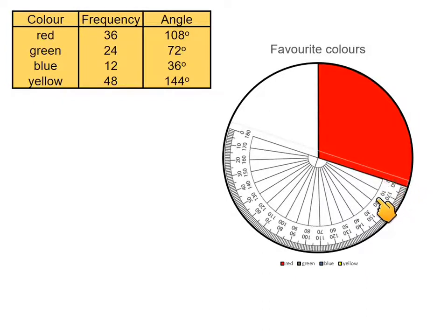So again, the 0 is here. We're going to read on the inside scale around to 72. Draw a little mark here. And then we get the green area.